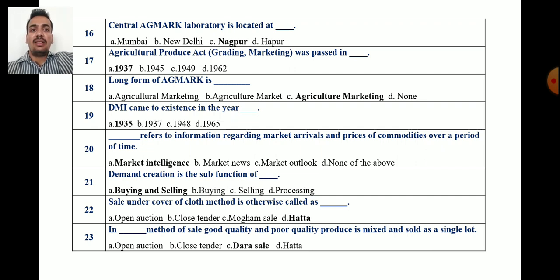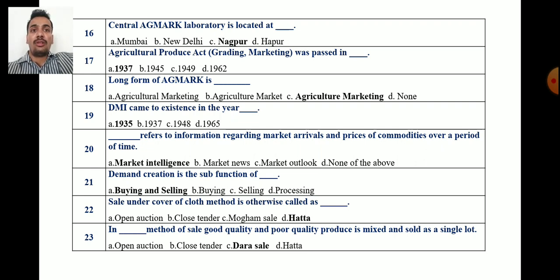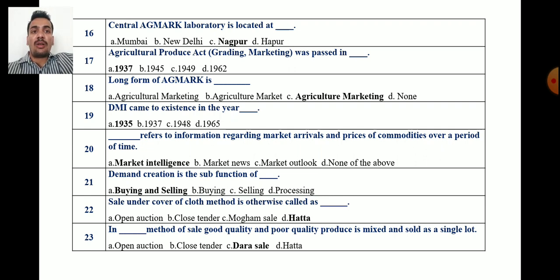Question 17: The Agricultural Produce Act for grading and marketing was passed in — 1937, 1945, 1949, or 1962? The correct answer is that the Agricultural Produce Act was passed in 1937.